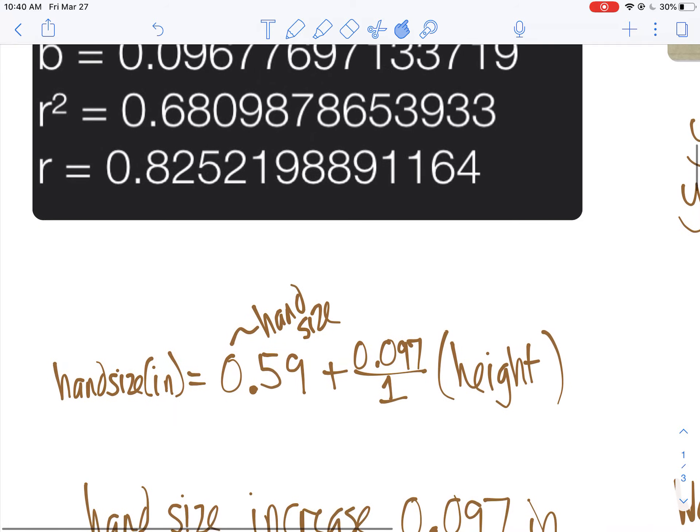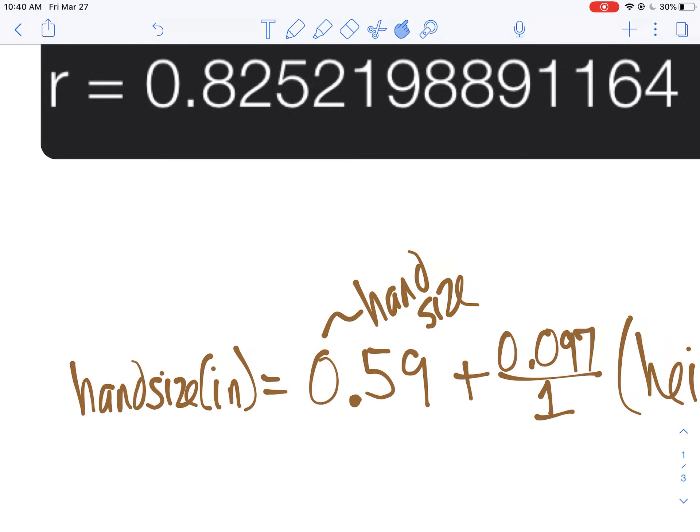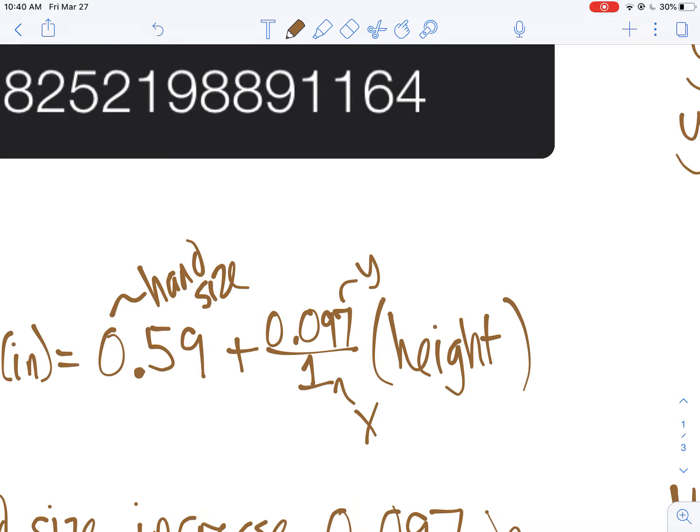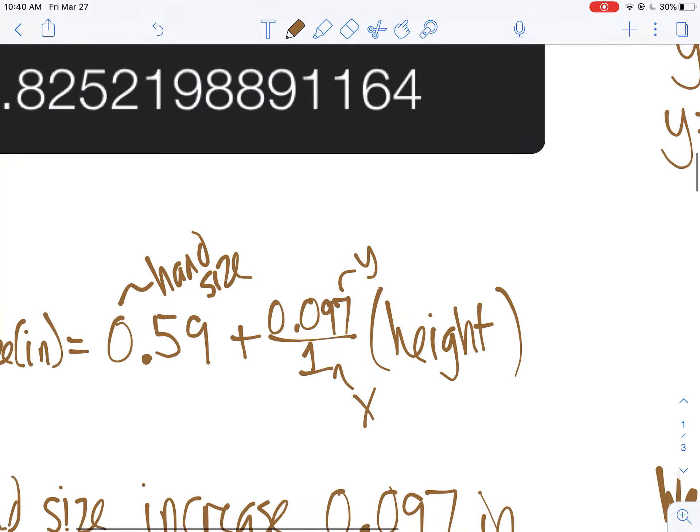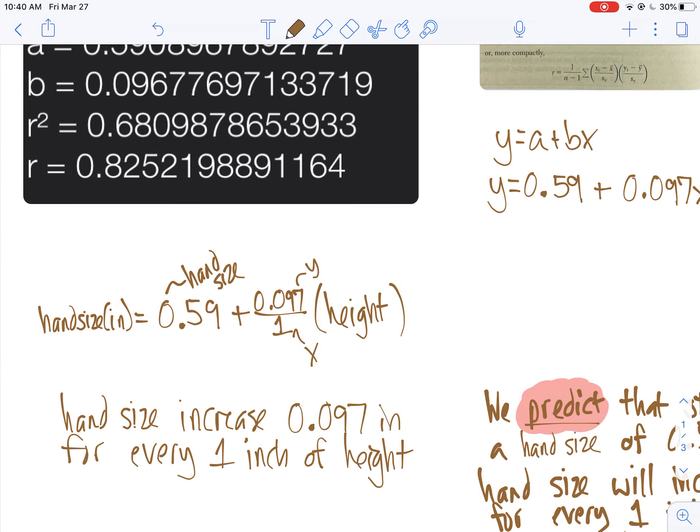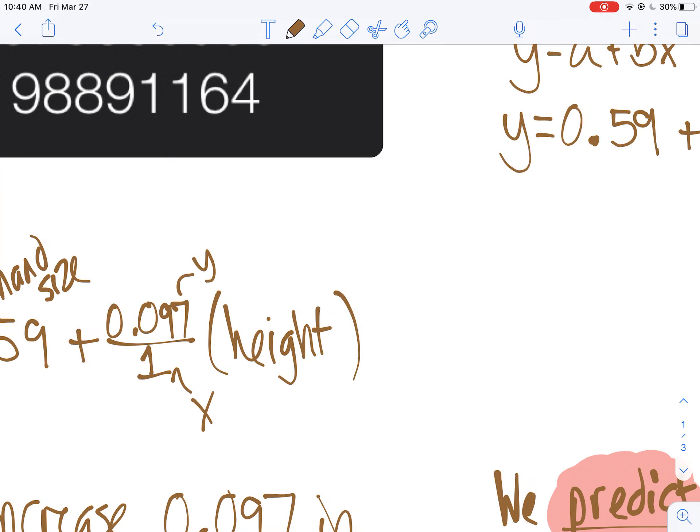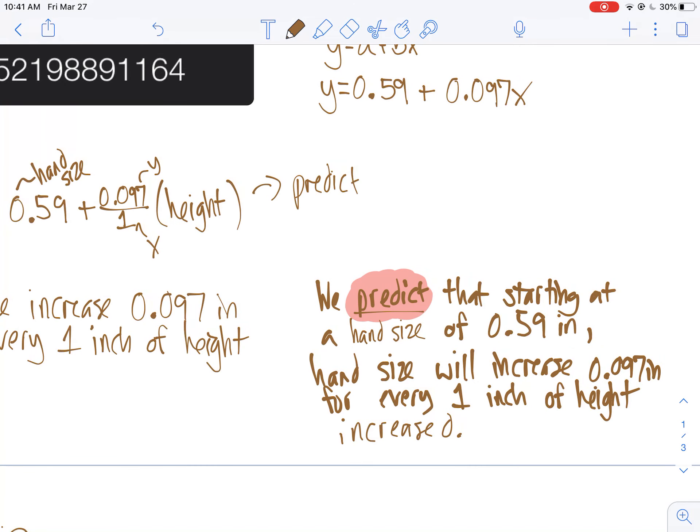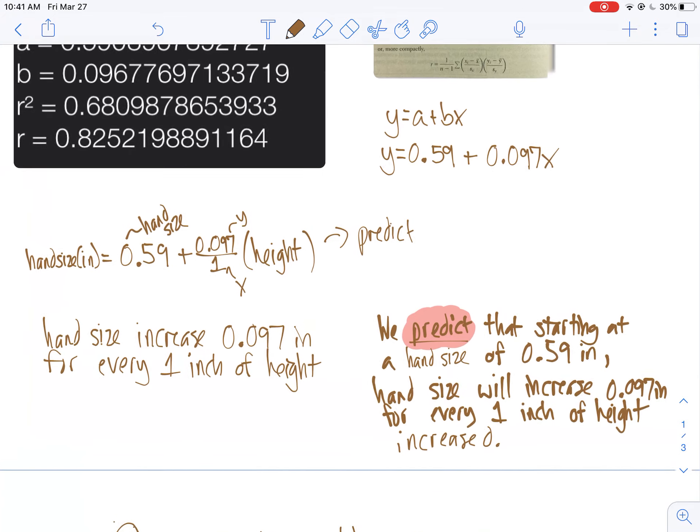So what I did here is I wrote out the formula Y equals A plus BX and I plugged in my values. This is never enough. Always write it in context. You'll notice I did that below. Hand size represents Y. So I have hand size equals 0.59, that will be the hand size you're starting with. You're starting at 6 tenths of an inch. What we expect is, remember, Y would be up here, X is down here just like for slope. So change of Y over change of X. We expect a tenth of an inch in hand size increase for every inch of height. And then you multiply that times the height. And then that should give you the hand size here.